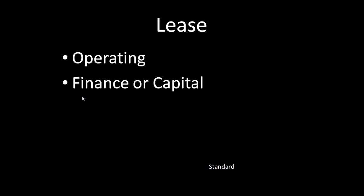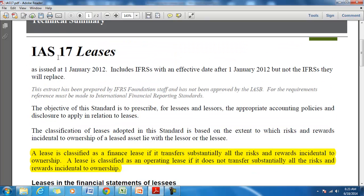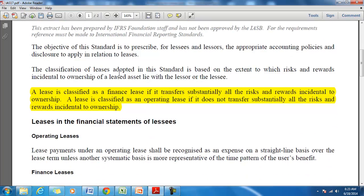Broadly speaking, leases are classified into two broad categories: operating leases and finance leases, which are also called capital leases. The accounting treatment of finance leases and operating leases is explained in the relevant accounting standard. Accounting standard IAS 17 says the classification of lease is based on the extent to which the risks and rewards are transferred by the lessor to the lessee.